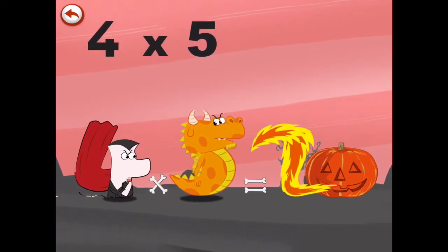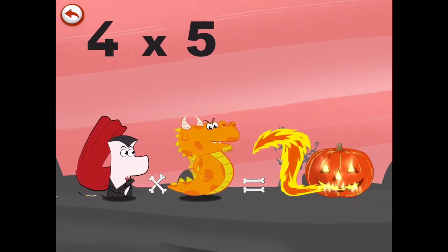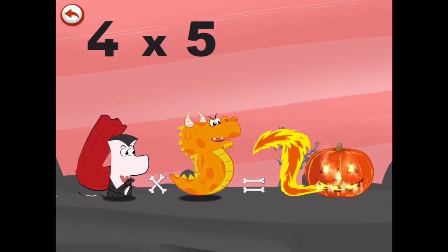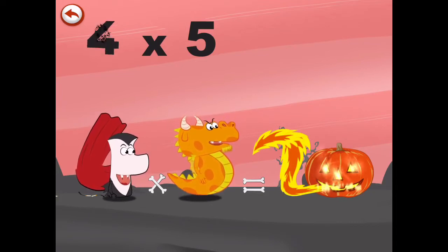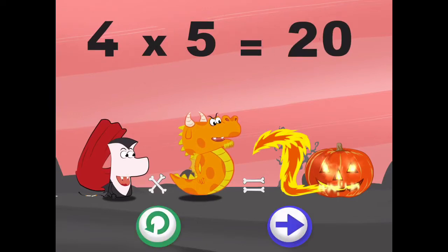Oh, poor dragon who breathes out an enormous flame in the shape of a 2. At last, Mr. Vamp 4's pumpkin, which is in the shape of a 0, is finally alight. 4 times 5 is 20.